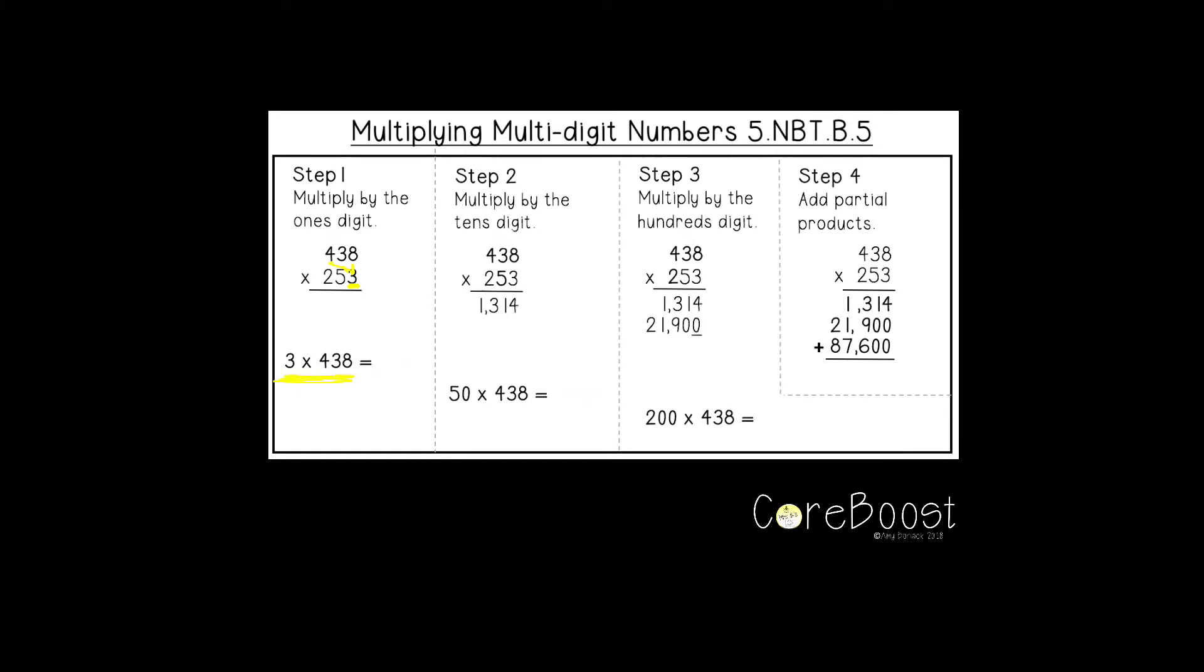You're really doing three times 438. Three times eight is 24. Write the four below and carry the two. Then three times three is nine, plus two equals 11. Write the one here and the ten there. Three times four is 12, plus one is 13.